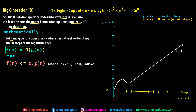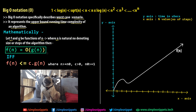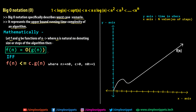f(n) = O(g(n)) if and only if f(n) ≤ c·g(n), where n > n₀, c > 0, and n₀ ≥ 1. In plain terms: this says that g(n) can be considered as an upper limit of f(n), as long as when multiplied by some positive constant c, c·g(n) is always greater than or equal to f(n) after some particular step n₀.